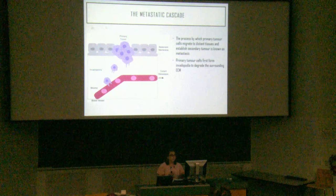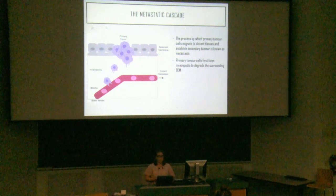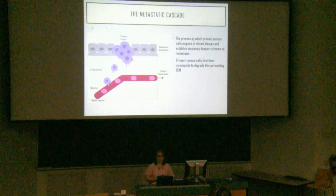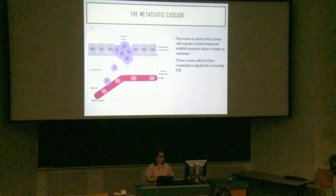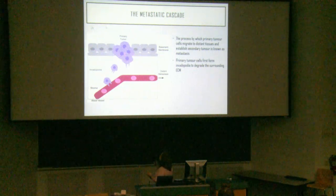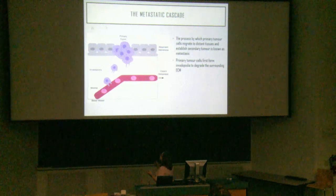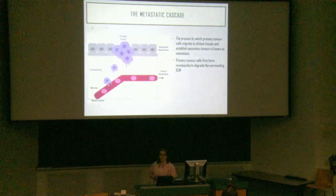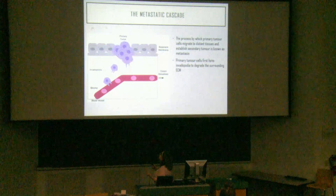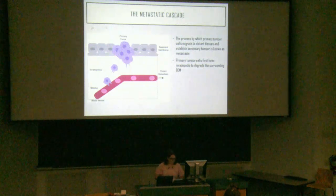The metastatic cascade is the process by which primary tumor cells migrate to distant tissues and establish secondary tumors. First, primary tumor cells must be able to degrade their surrounding extracellular matrix. One method that tumor cells use is making F-actin protrusions known as invadipodia.